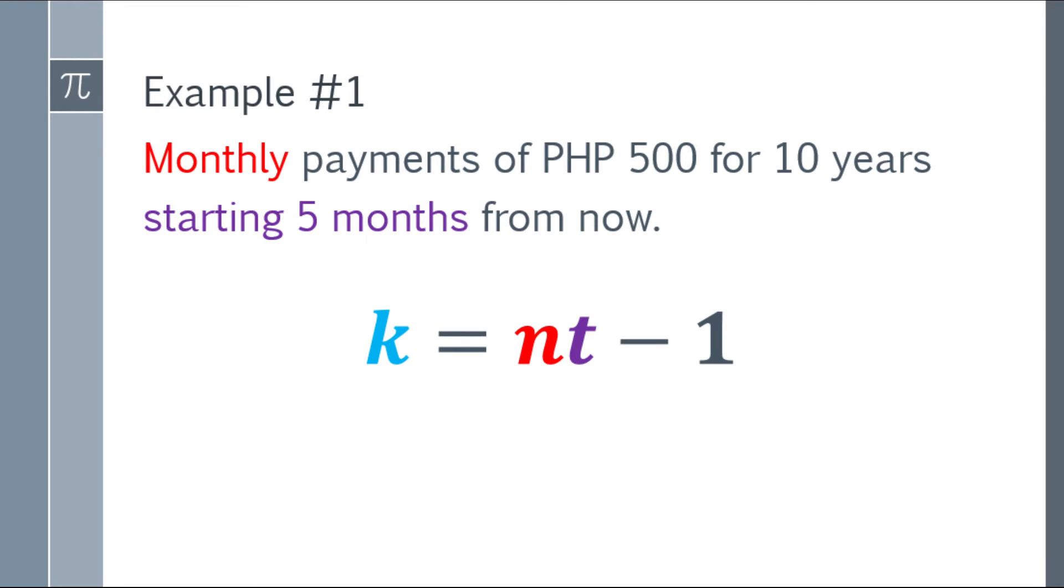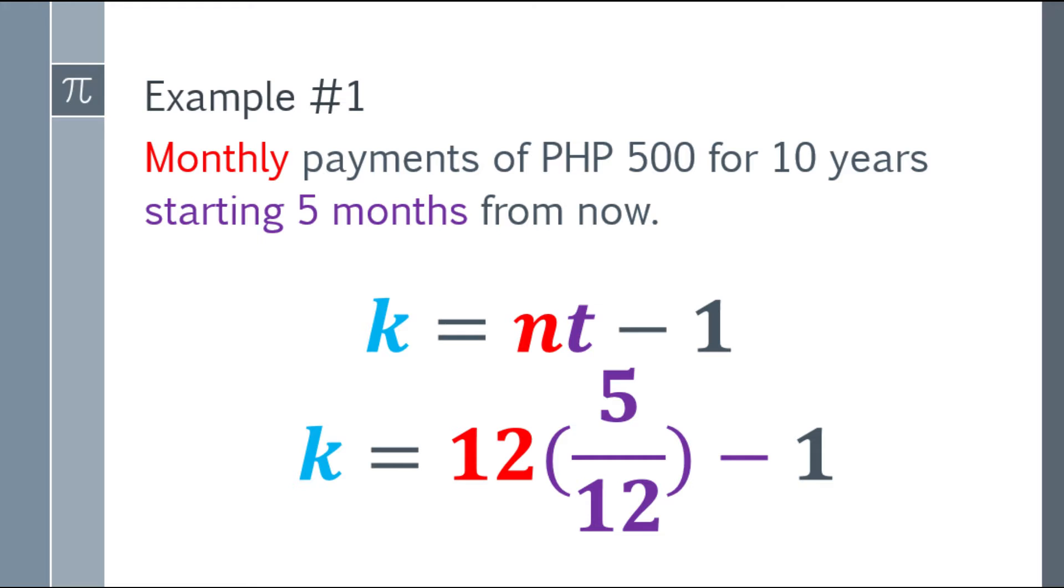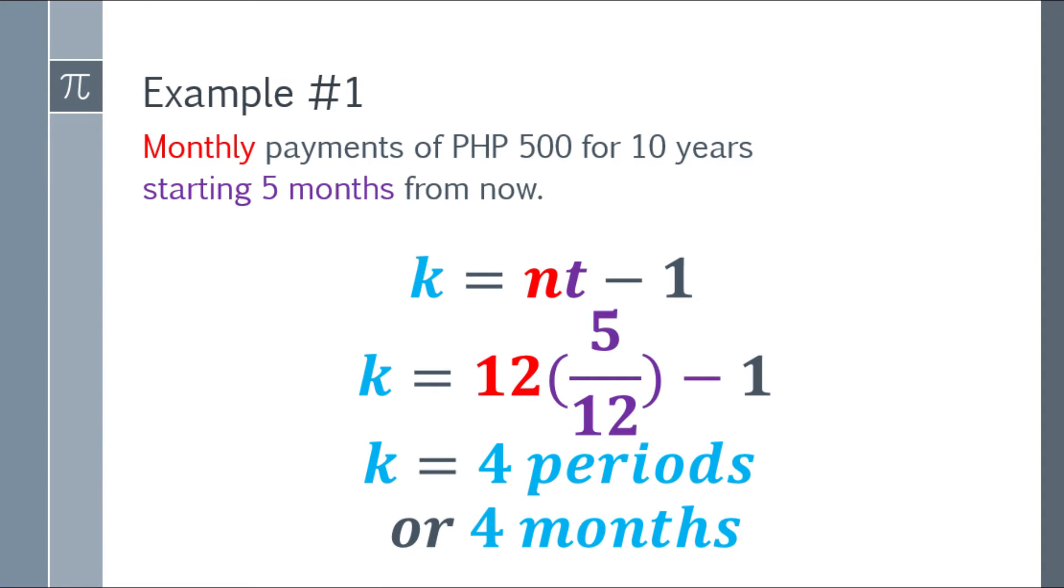Using the formula, k equals nt minus 1. This is color-coded. So k will be 12 times 5 over 12. Why 5 over 12? Remember, starting 5 months. T is always dependent on years. There are 12 months in a year and the problem states starting 5 months, so 5 over 12. Cancel out the 12. So 5 minus 1 equals 4.